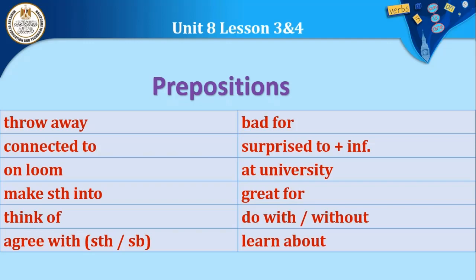'Bad for' means bad for something — something is unsuitable or harmful. 'Surprised to' plus infinitive — 'surprised' means astonished/متفاجئ, followed by 'to' and an infinitive. 'At university' — 'at' here is a preposition of place used with the word university. 'Great for' means something is great or excellent for a purpose. 'Do with' and 'do without' — meaning to manage with something or manage without it. 'Learn about' means to learn about a topic.